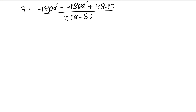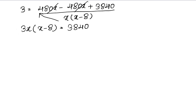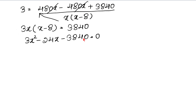The x values cancel out, and the multiplication gives us: 3 × x(x−8) = 3840. Opening the brackets: 3x² − 24x = 3840, which gives 3x² − 24x − 3840 = 0. Now we check whether the entire equation is divisible by 3 — yes it is: 3÷3=1, 24÷3=8, 3840÷3=1280.